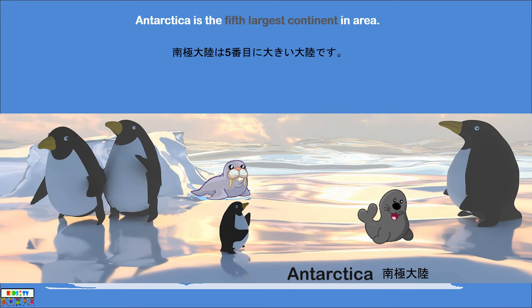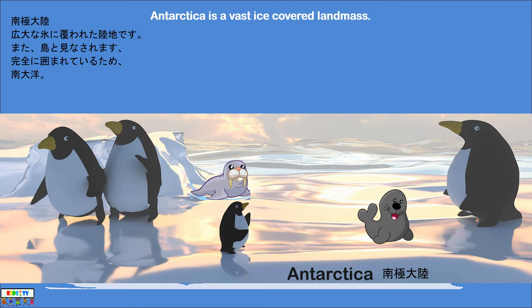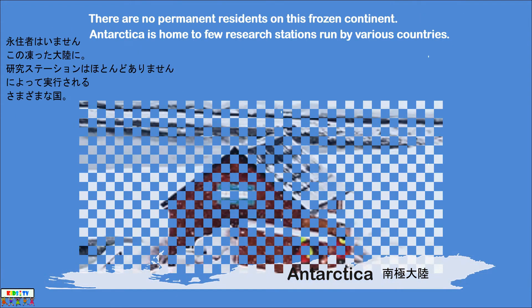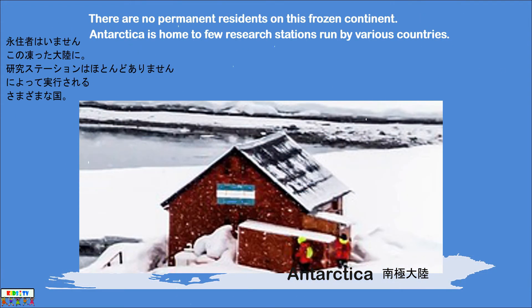Antarctica is the fifth largest continent in area. It is a vast ice-covered landmass and is also considered an island because it is completely surrounded by the Southern Ocean. It is the coldest, windiest, driest, and least populated continent on Earth, and is considered a desert. There are no permanent residents on this frozen continent. Antarctica is home to a few research stations run by various countries.